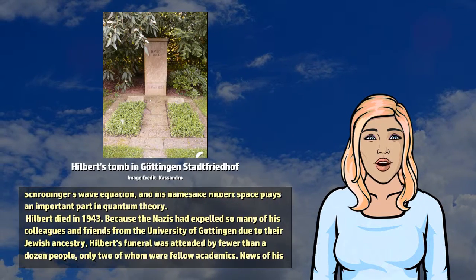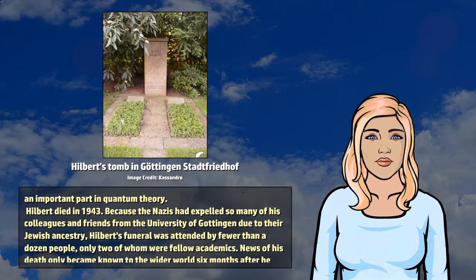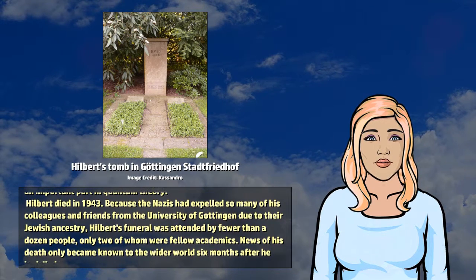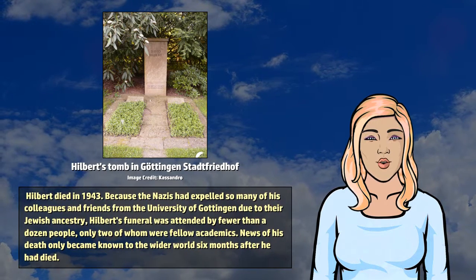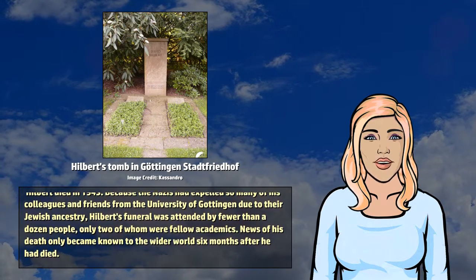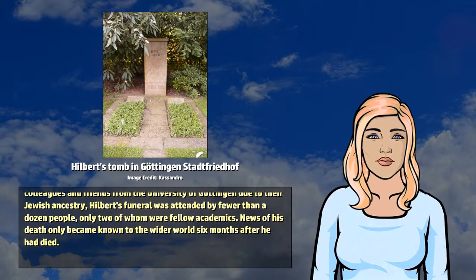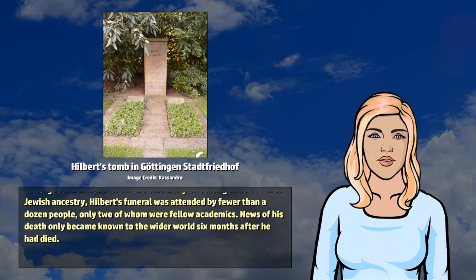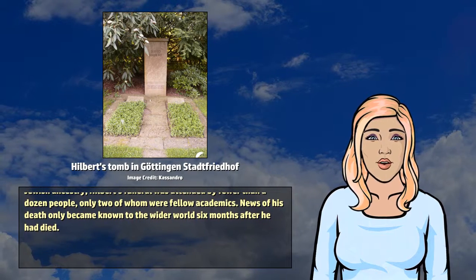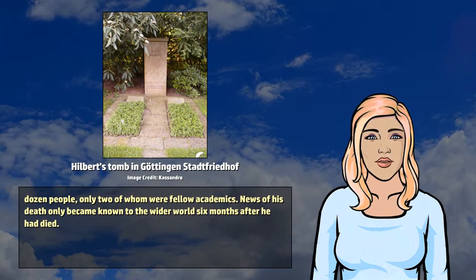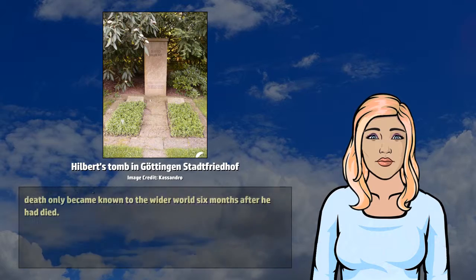Hilbert died in 1943. The Nazis had expelled so many of his colleagues and friends from the University of Göttingen due to their Jewish ancestry that Hilbert's funeral was attended by fewer than a dozen people, only two of whom were fellow academics. News of his death only became known to the wider world six months after he had died.